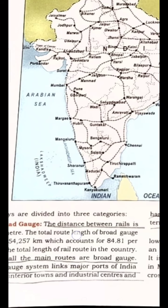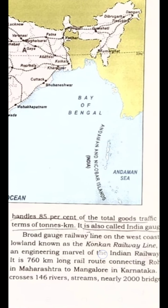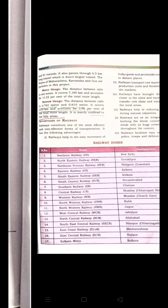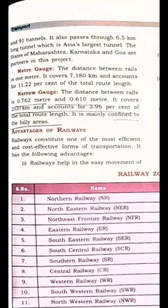In Hindi, the broad gauge is called the badi line — you must have heard the phrase 'train badi line se aa rahi hai.' The meter gauge is the chhoti line. So the main trains all run on the badi line and the smaller one is your meter gauge, which is your chhoti line.